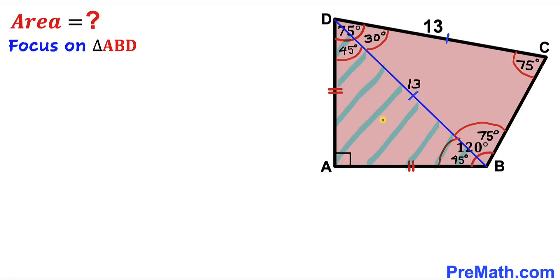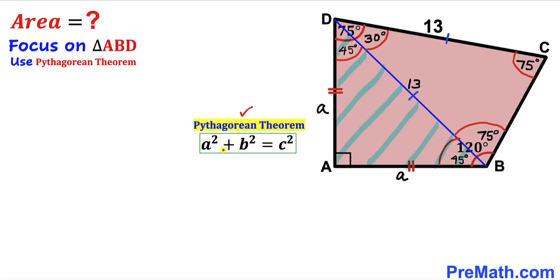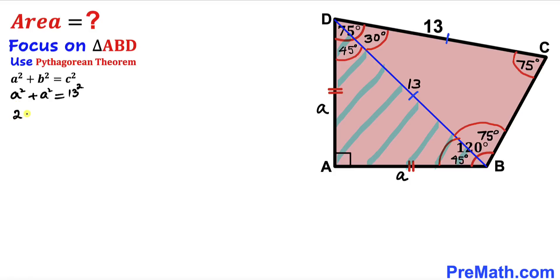Now let's focus again on right triangle ABD. Since the two side lengths AD and AB are congruent, let me label each as lowercase a. We are going to apply the Pythagorean theorem: A² + B² = C². In our case the hypotenuse is 13, so we get a² + a² = 13², which gives 2a² = 169. Dividing both sides by 2, our a² value turns out to be 169 divided by 2.